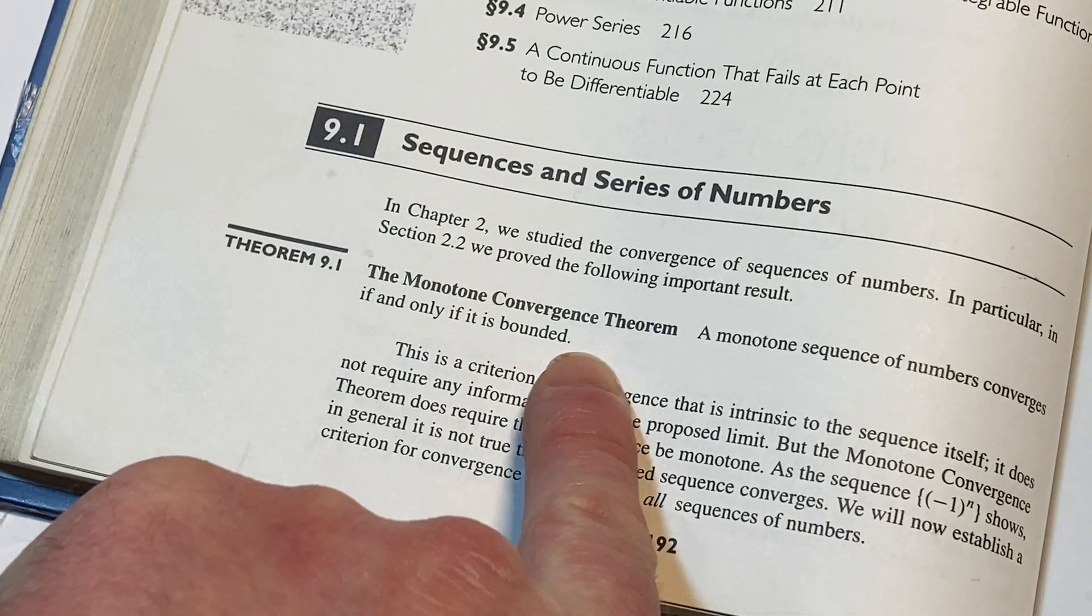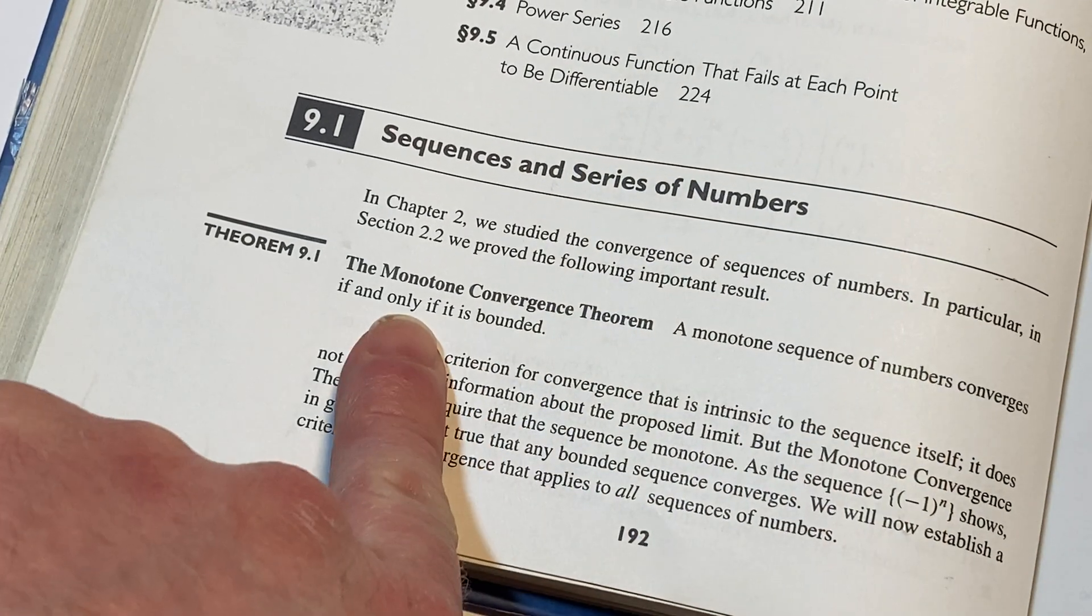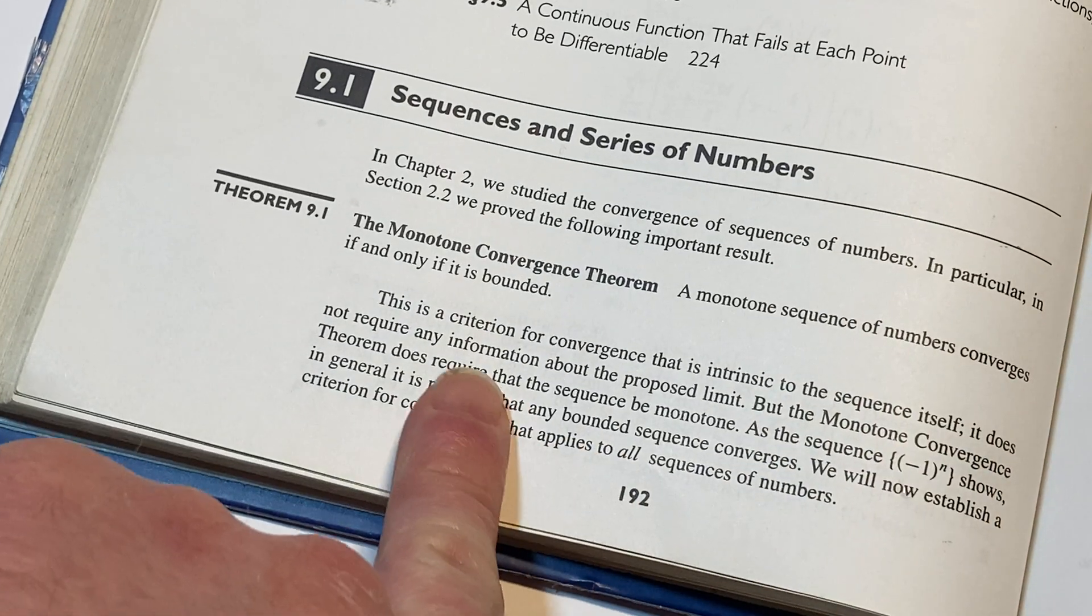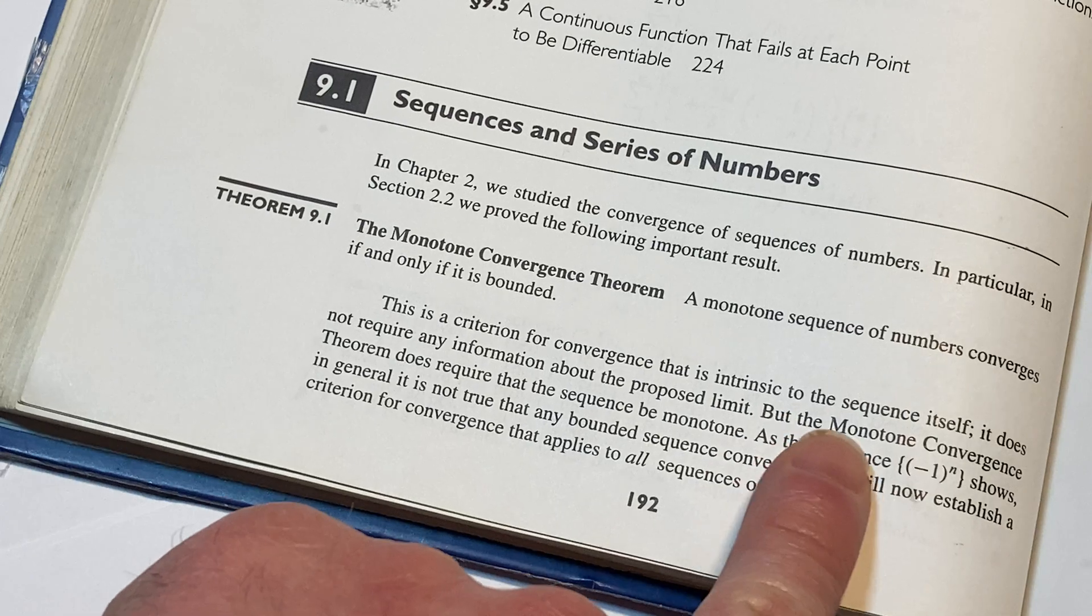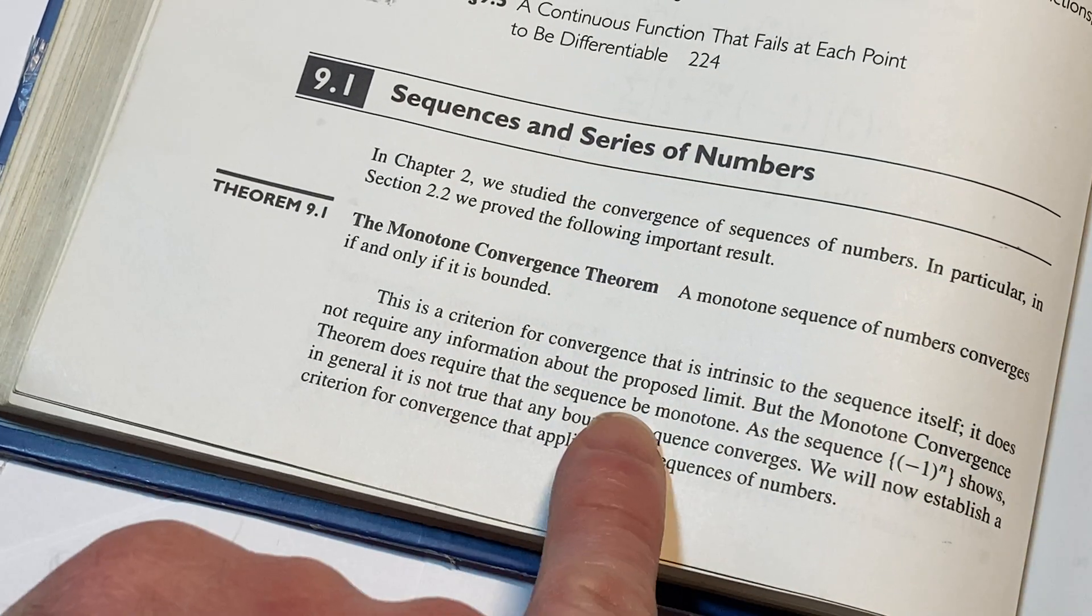The Monotone Convergence Theorem: A monotone sequence of numbers converges if and only if it is bounded. This is a criterion for convergence that is intrinsic to the sequence itself. It does not require any information about the proposed limit.